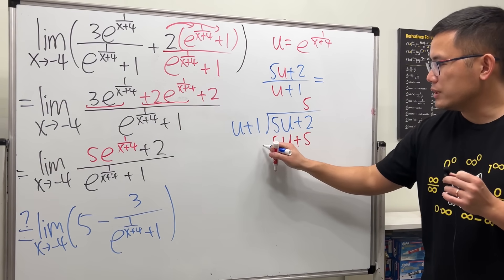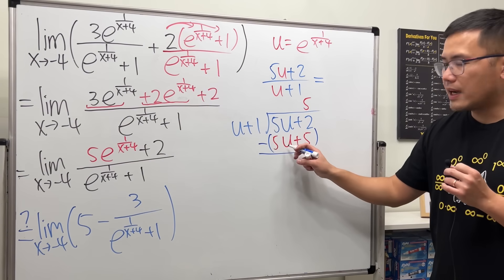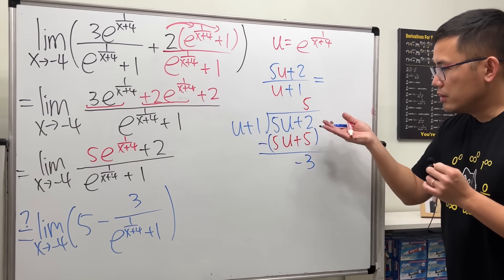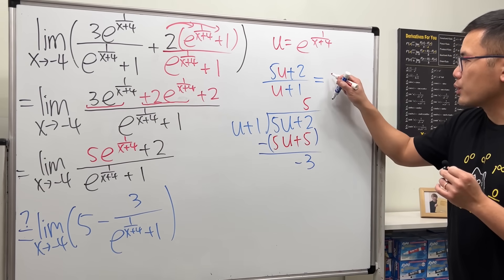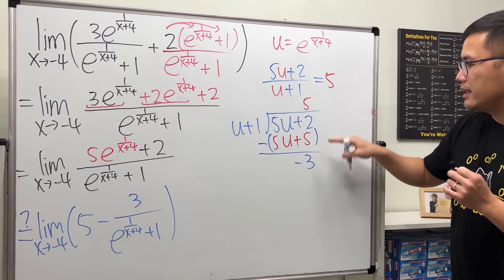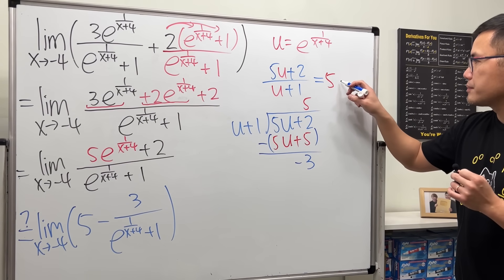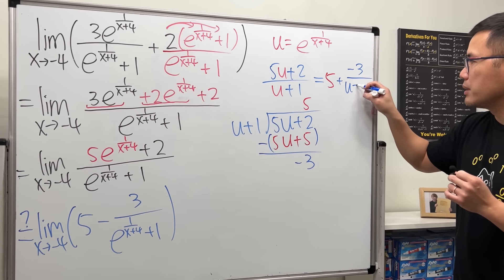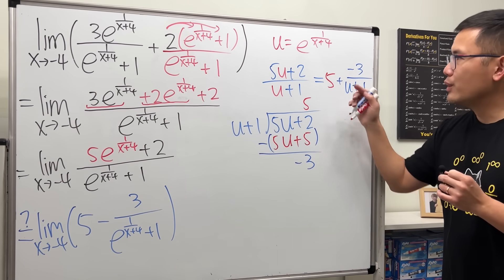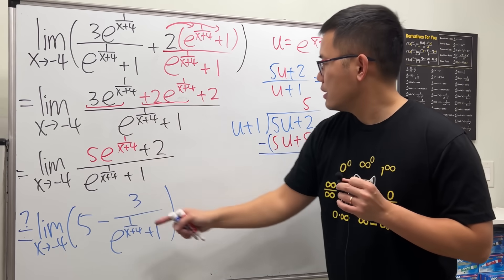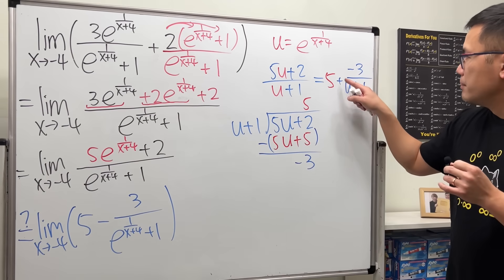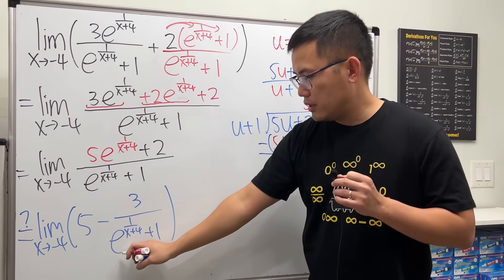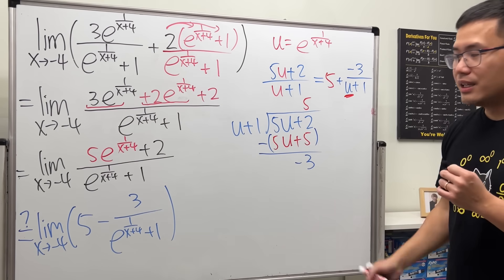For polynomial long division we subtract: five u minus five u is zero, and two minus five is negative three. The answer is five as the quotient, and negative three is the remainder, so we write five plus negative three over the original denominator u plus one. Since u is exactly our e to the one over x plus four expression, we get five minus three over that expression plus one.